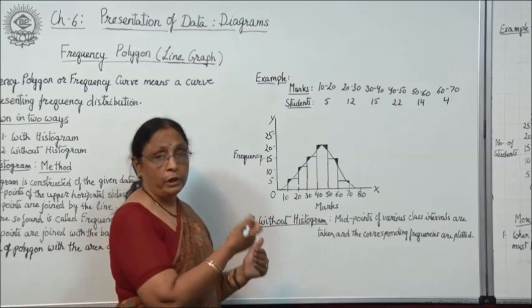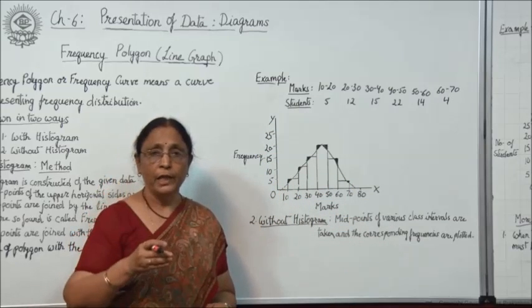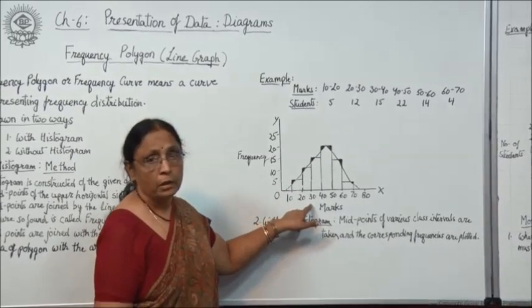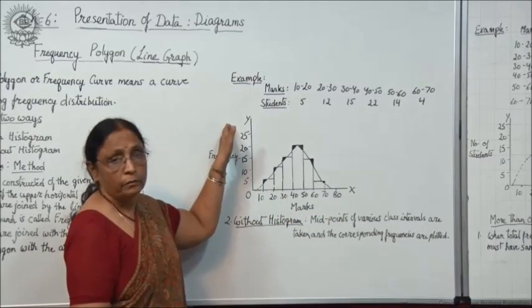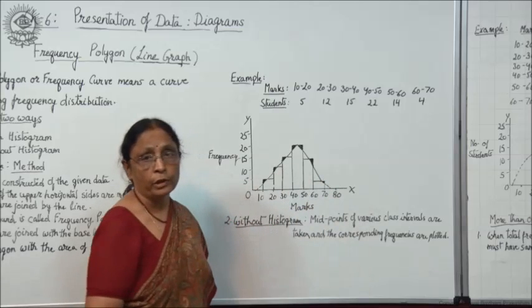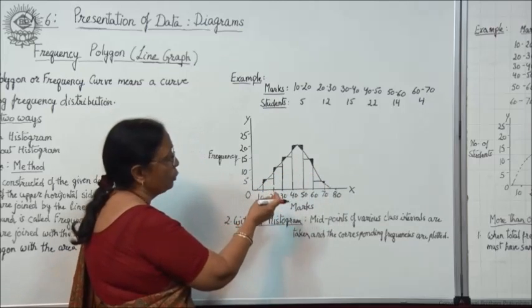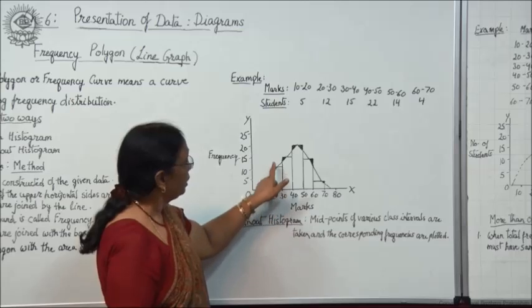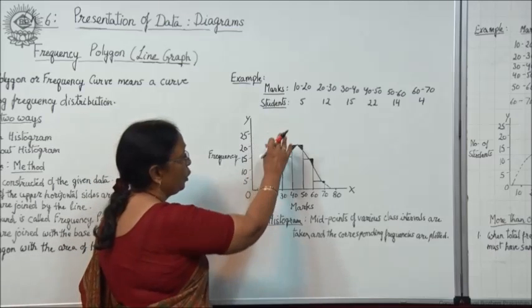Marks in the form of class intervals are given and number of students are given as frequency distribution. You have to draw two axes: O-Y as the vertical axis and O-X as the horizontal axis. Always take the marks or independent variable on the horizontal axis and the dependent variable on the vertical axis — that means frequency on the vertical axis and class interval on the horizontal axis. According to the given data, first draw the histogram: for 10 to 20, make a rectangle; for 20 to 30, draw according to the frequency given, and so on.